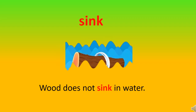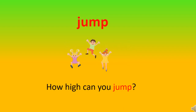The word is 'sink.' The meaning of sink is when an object does not stay on water or any liquid surface but drops down inside. The next word is 'jump.' You all know the meaning of jump — it is your favorite activity. Jump means to rise quickly. Let's use this word in a sentence: How high can you jump?